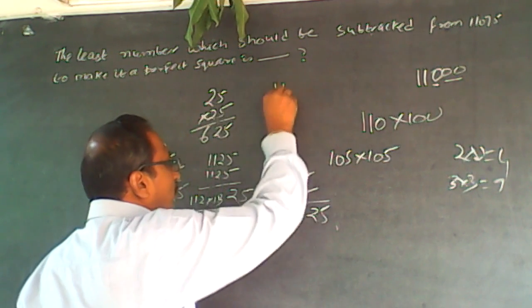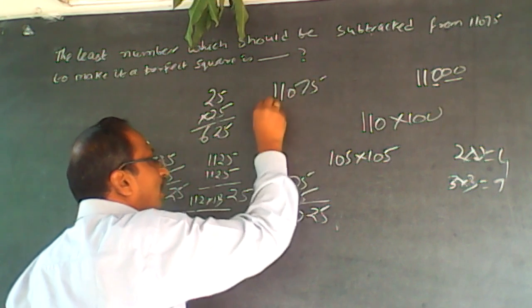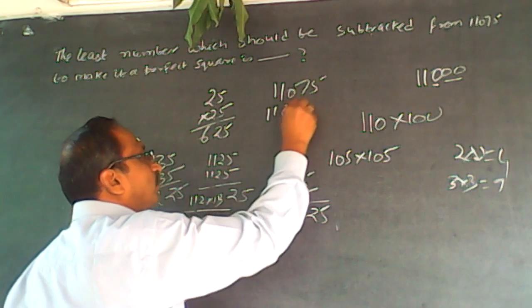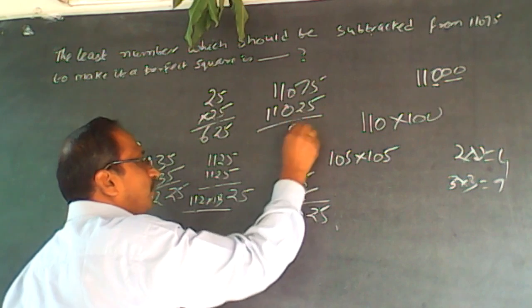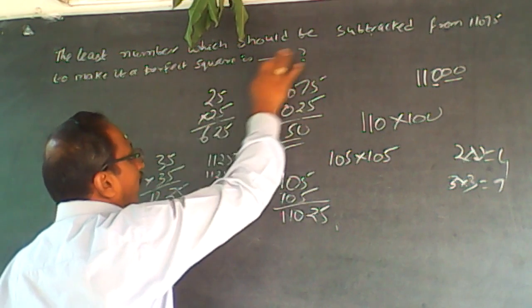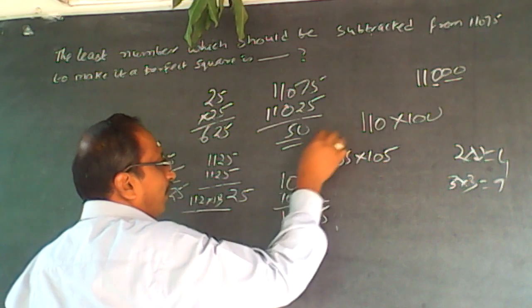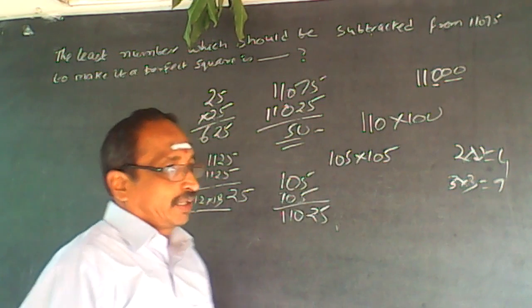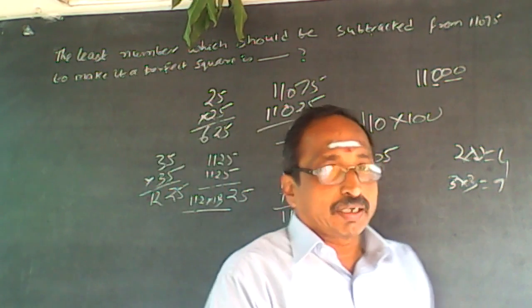So the answer is 50. The question is what should be subtracted from 11075? 50 should be subtracted.